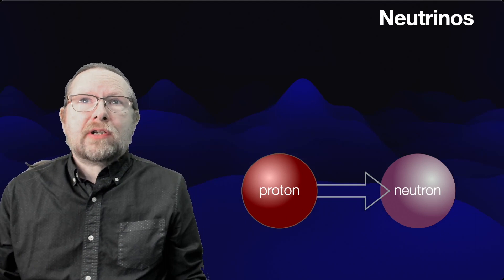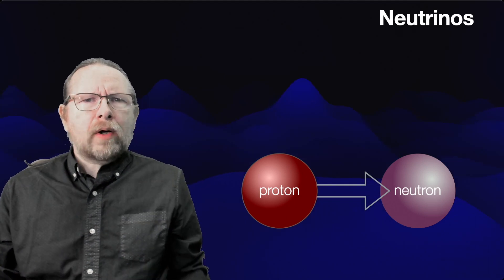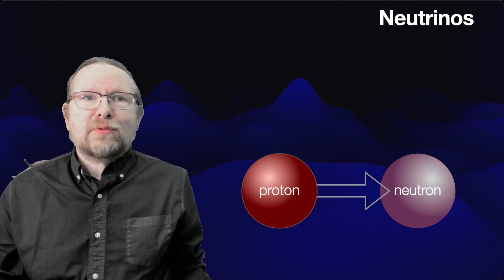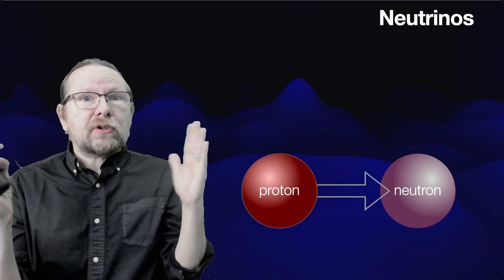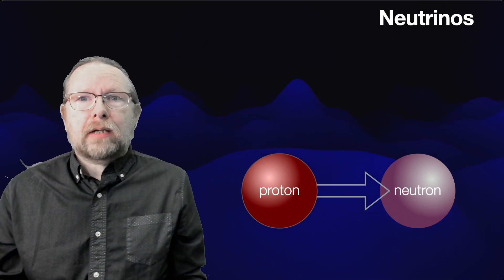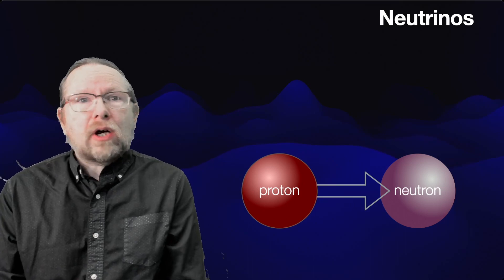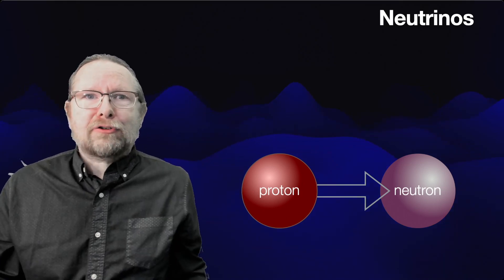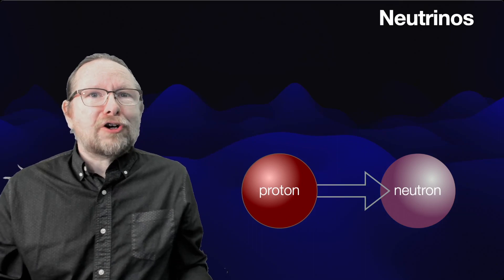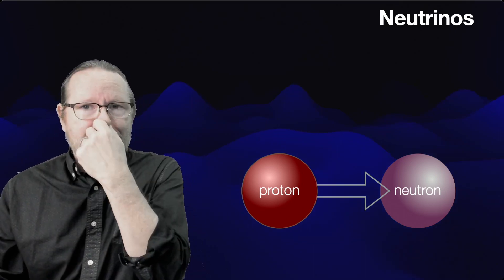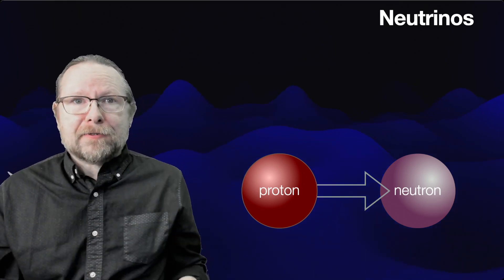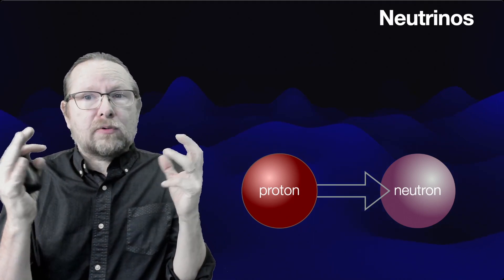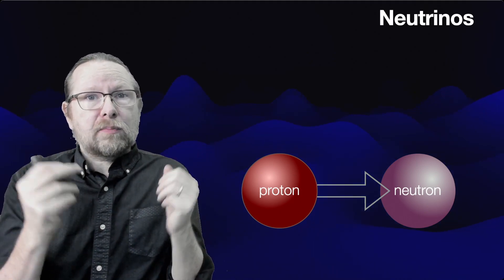We're going to continue our discussion of what are the most fundamental constituents of the universe, what are their names, how do they behave, and what are the interactions that govern their behavior. We talked in an earlier video about electrons and the electron's little friend, the charged particles called leptons, and the nature of the force between them, which is the electromagnetic force — the thing we think of as electrical attraction and repulsion.